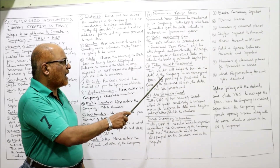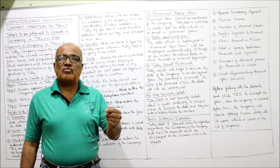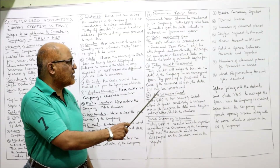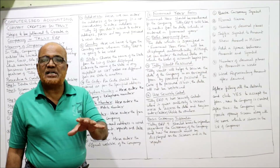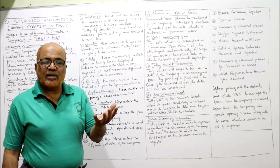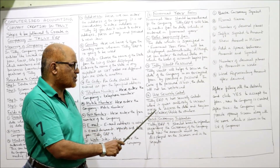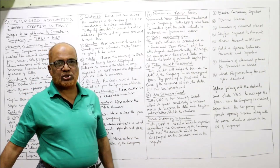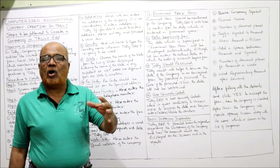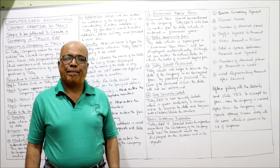Next is 'Tally Vault Password.' The Tally Vault helps secure company data in encrypted form by providing a password. If the password is not available, the data cannot be retrieved, so it must be carefully preserved. Then 'Use Security Control' — Tally ERP 9 has a security control feature that gives authority to various users to access, enter, alter, or delete data using assigned control techniques.